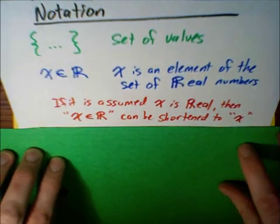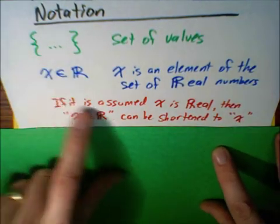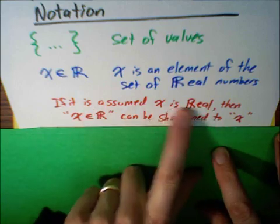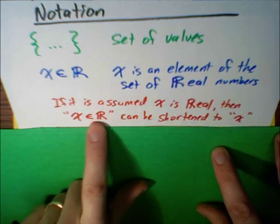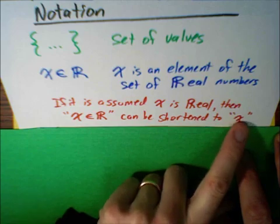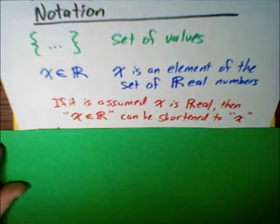Since the vast majority of work that people do is in the real number system, then we can just assume that it's real. So instead of writing x as an element of the real number system, sometimes people just write x in set-builder notation.